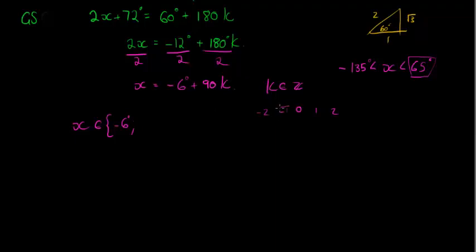How about going in the negative direction? Let's subtract 90 once. Negative 6 minus 90 gives me negative 96. Negative 96 is larger than negative 135 and smaller than 65. So negative 96 degrees is another solution.